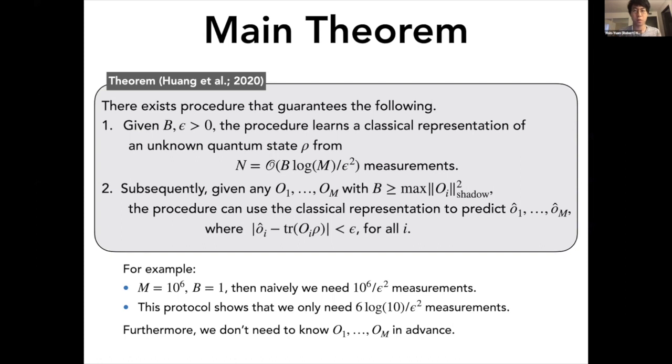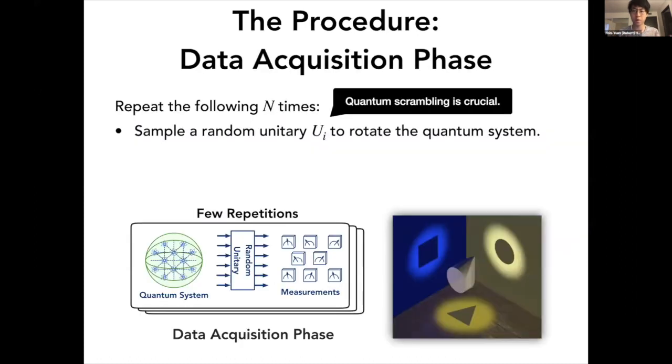So how does this procedure work? It's actually very simple and it's based on quantum scrambling. In the first step, what you would do is you would sample a random unitary Ui from some ensemble. So you use this unitary Ui to rotate your quantum system and after that you just perform a computational basis measurement.